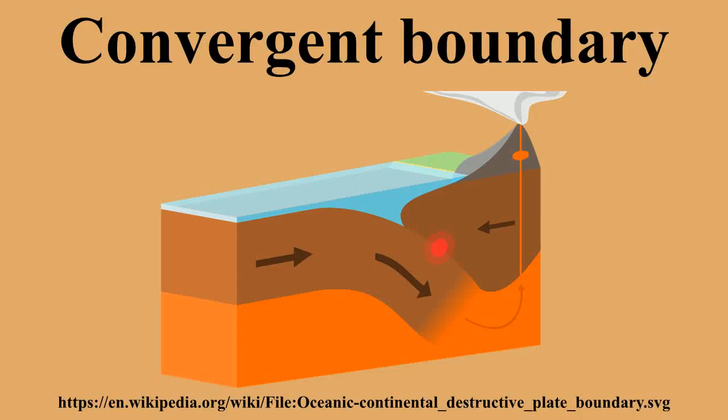As the subducting plate descends, its temperature rises, driving off volatiles encased in the porous oceanic crust. As this water rises into the mantle of the overriding plate, it lowers the melting temperature of surrounding mantle, producing melts with large amounts of dissolved gases. These melts rise to the surface and are the source of some of the most explosive volcanism on Earth because of the high volumes of extremely pressurized gases. The melts rise to the surface and cool, forming long chains of volcanoes inland from the continental shelf and parallel to it.